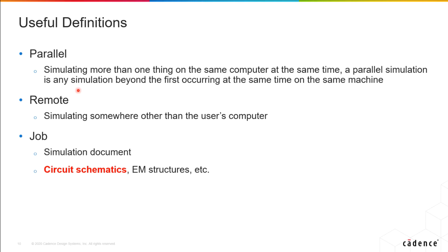Before I get into that, I want to cover a few useful definitions. When we talk about remote and parallel, often the word 'distributed' is used, and that can mean many things. Parallel refers to simulation on a single computer — for example, if you have a laptop with eight cores, you might run eight simulations in parallel on that one machine. Remote, on the other hand, means simulating somewhere besides your own computer — for instance, on a server farm with six machines. These aren't mutually exclusive. A 'job' is a simulation document, which might be a schematic, an EM structure, or a data file or net list.